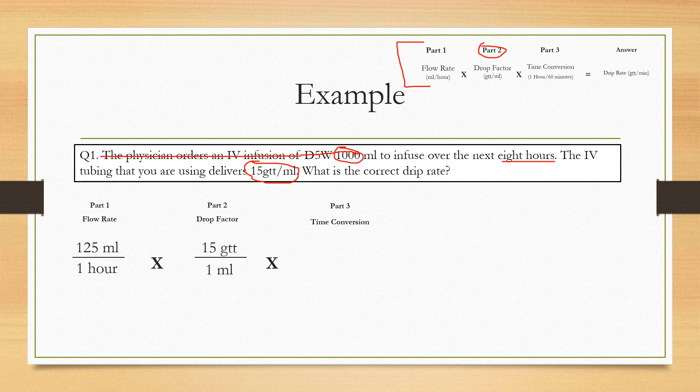So we're just going to put that into the formula just how it is. Drips per milliliter. So 15 drips per milliliter. Just put it in just like that.